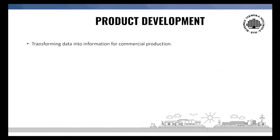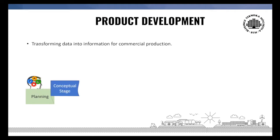Product development is the process by which an organization transforms data on market opportunities and technical possibilities into information assets for commercial production. It involves four generic stages. Planning is defined as Stage 0, as it precedes the launch of the original product development process. The first stage is the conceptual development stage, where the needs of the target market are identified, product concepts are generated and evaluated, and one or more concepts are selected for further development and testing. The second stage is system-level design, which includes the definition of product architecture, decomposing a product into subsystems and components.